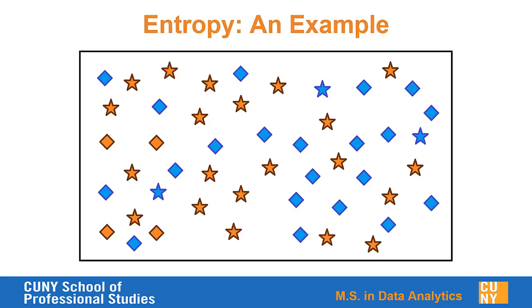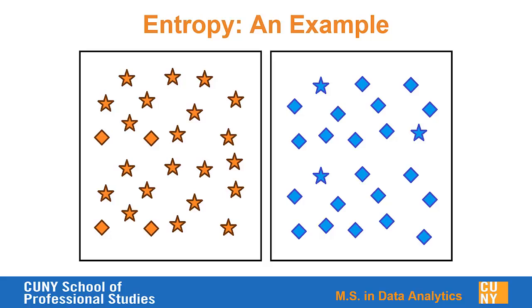Our partition might be on color. We're interested in predicting star versus diamond, and our partition will be on the color. We'll create an orange box and a blue box. It's very much easier to predict whether it will be a star or a diamond in each of these two boxes compared to the original total data set. There's a lot less disorder here. We would expect to have a significant information gain when we partition on color.